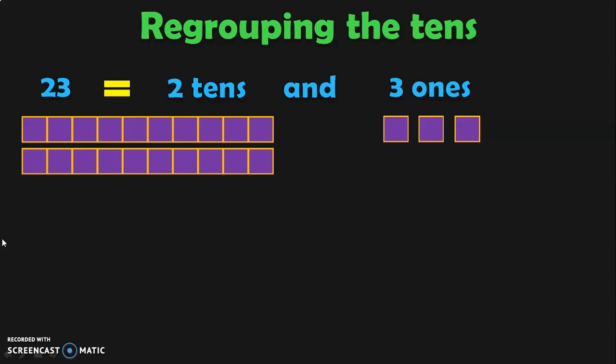Now we are going to regroup the tens. Two tens can be regrouped as one ten and another ten. That other ten can be written as ten ones. Taking those ten ones to the ones place, the ones place will become 13 ones. Check if it is correct: one ten plus thirteen ones will give you 23. So you get the same answer, and here you have regrouped the tens place.